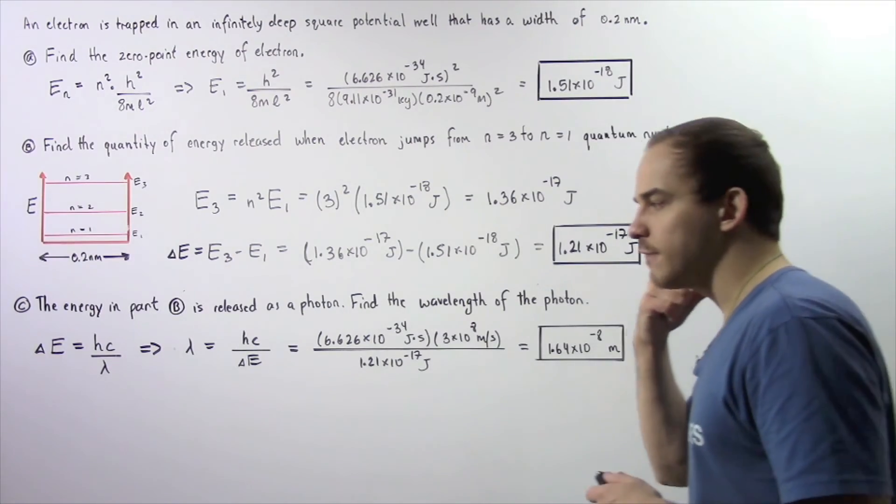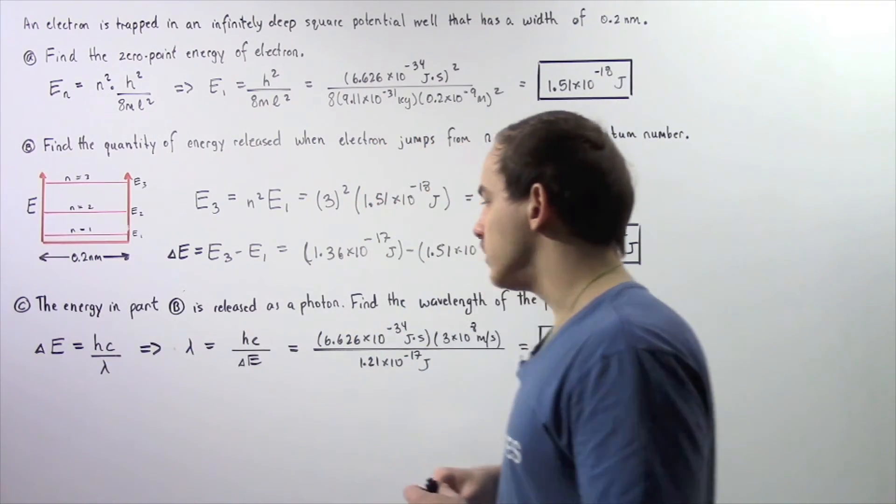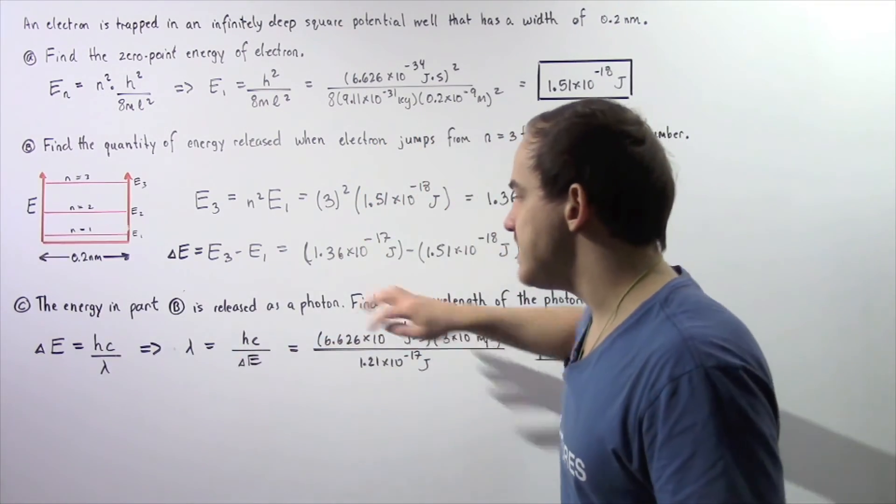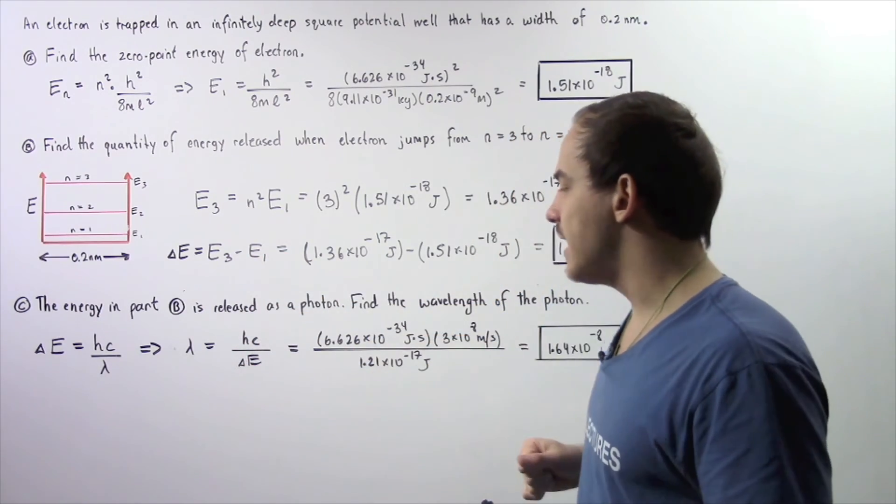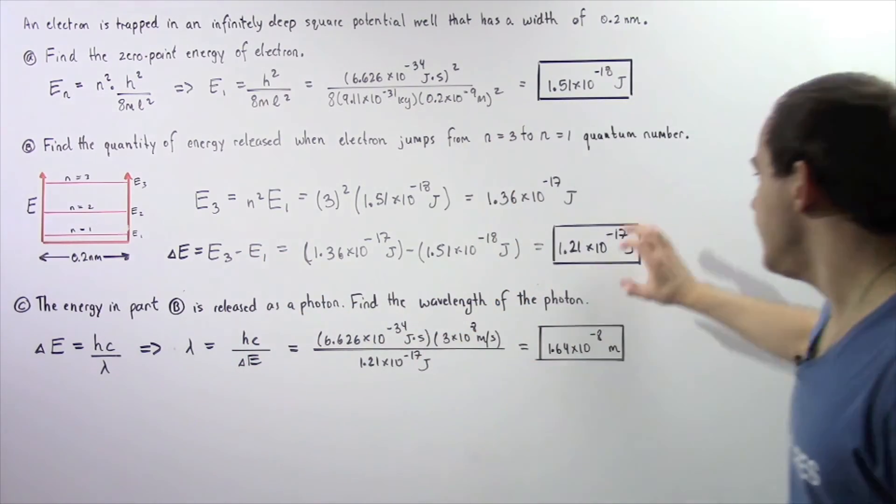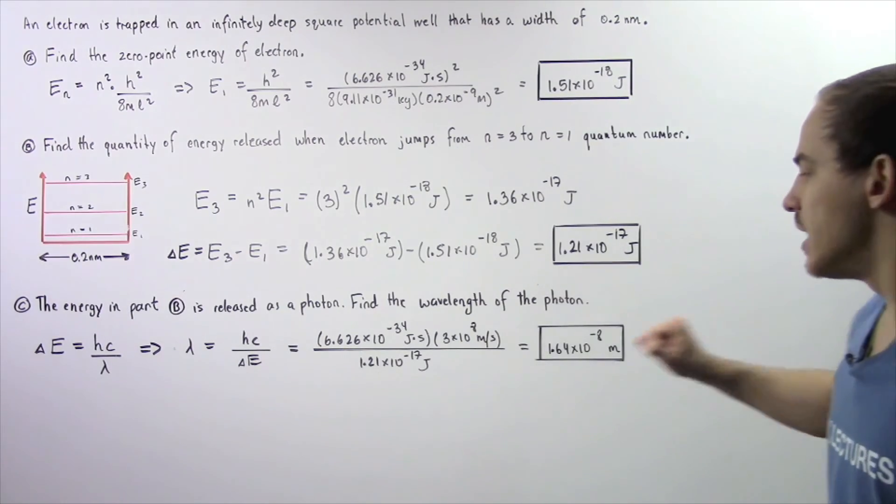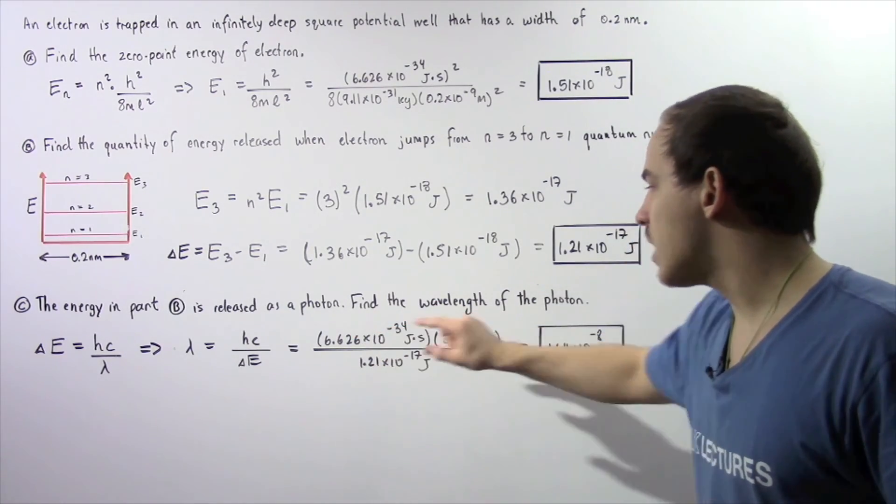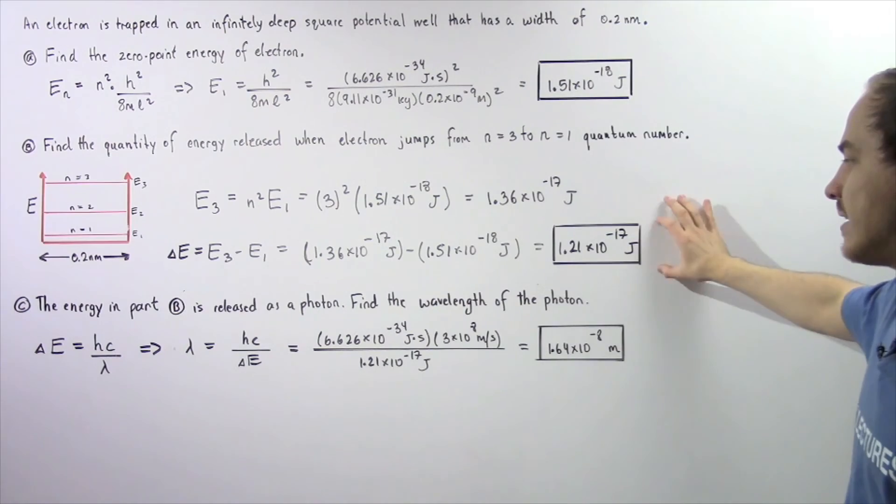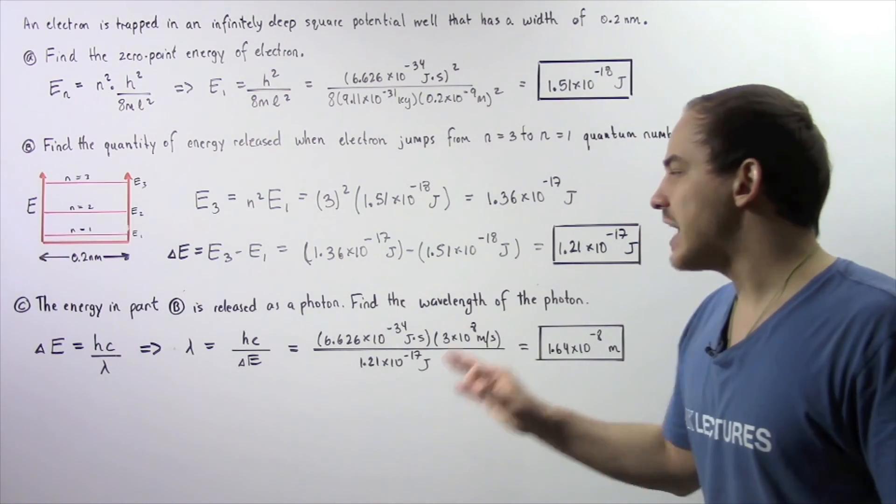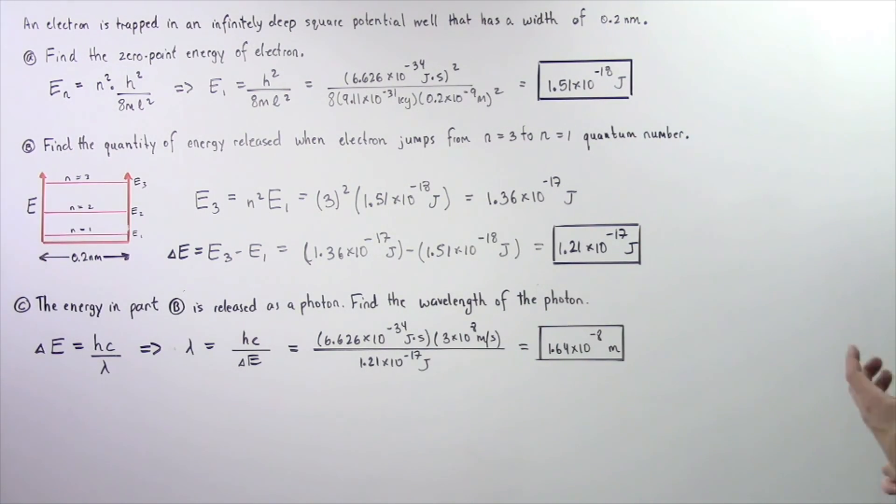Lambda is what we're looking for. If we solve for lambda, the wavelength is equal to HC divided by delta E, where delta E is this quantity found in part B. If we plug in our two constants, and we use this energy value, we find that the wavelength of our photon of light is equal to about 1.64 times 10 to the negative 8 meters.